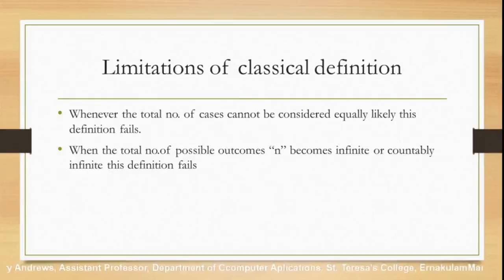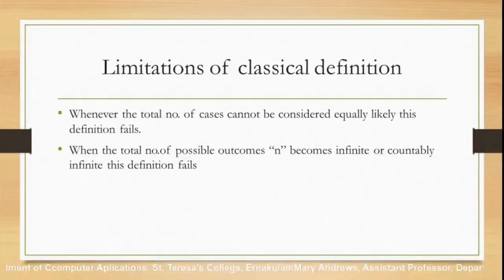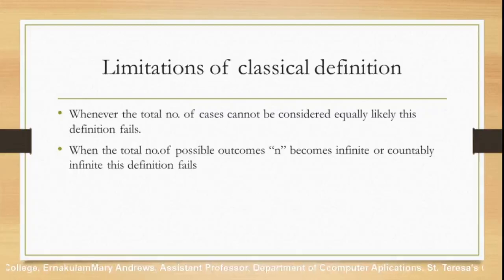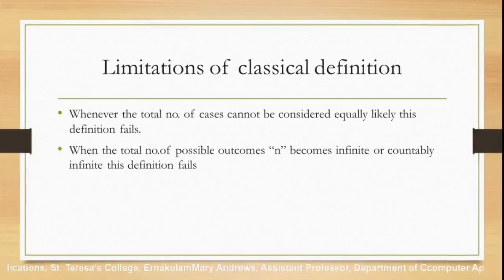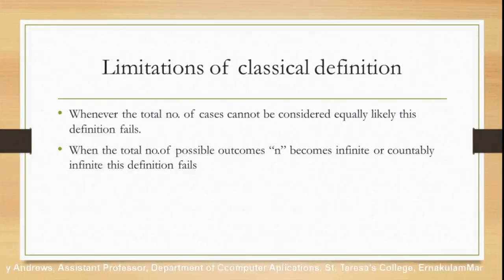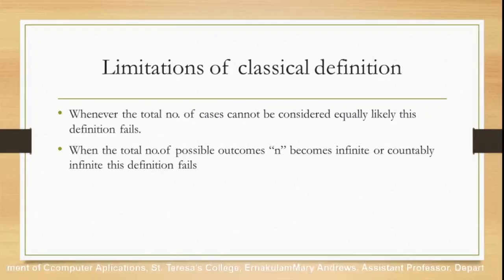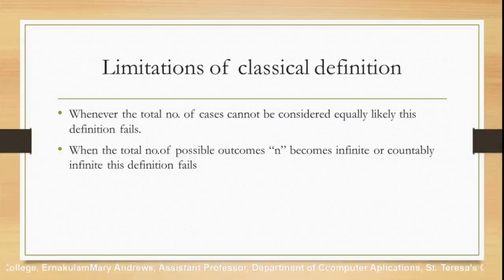This classical definition has certain limitations, which is why we have two other definitions that will be discussed in the next video. The first limitation is: whenever the total number of cases cannot be considered equally likely, this definition fails. The second limitation is: when the total number of possible outcomes n becomes infinite or countably infinite, this definition also fails.